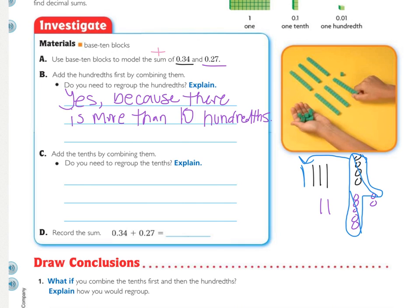A super simple response, yet correct, would be yes, because there are more than ten hundredths, which then we regrouped. C tells us the next step is to add the tenths by combining them. So how many tenths are there, and do we need to regroup the tenths? Yes or no, and why? The answer is no, because there's only 1, 2, 3, 4, 5, 6, so there is less than ten.